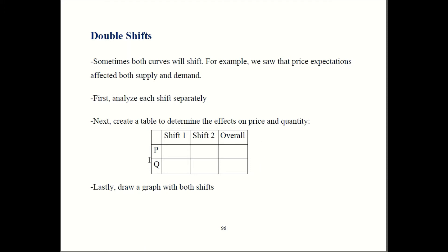And we'll create a table that looks like this to look at the effects. So first we'll draw an up arrow for price if price goes up. If price is going down, instead we'll draw a down arrow there. And then we'll do the same for quantity. So up arrow means quantity rises. Down arrow means quantity falls. Do the same thing for the second shift.